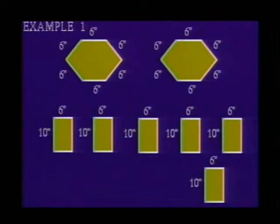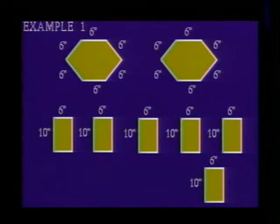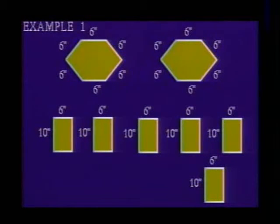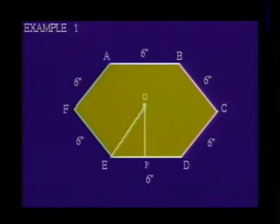The perimeter, of course, is easy to calculate. It is the sum of the sides of the hexagon, which is 36 inches. The length of the apothem will require a bit more work. Look at hexagon ABCDEF.